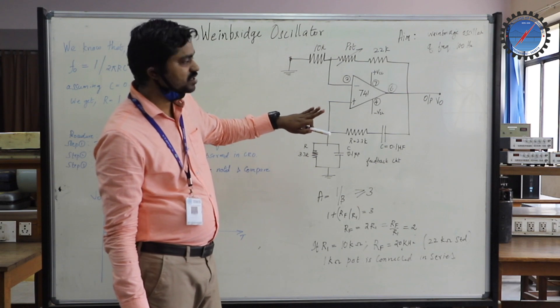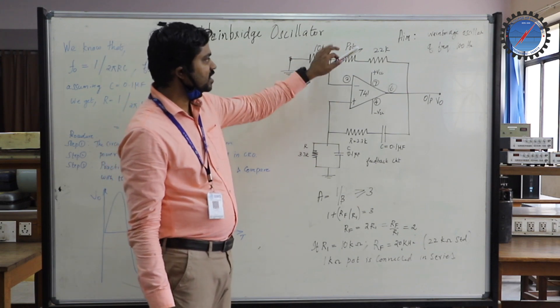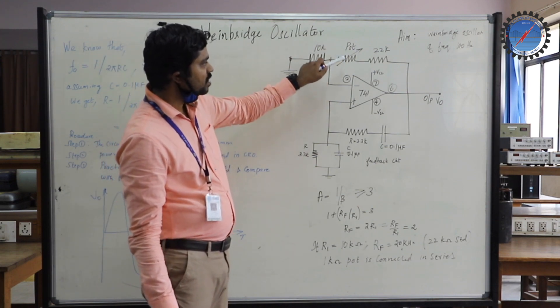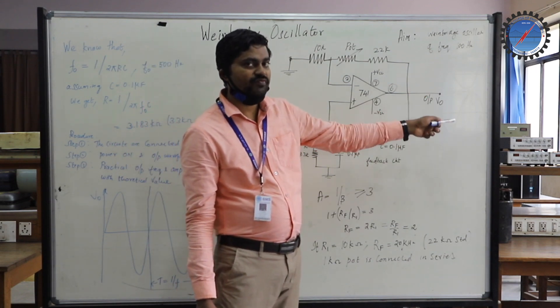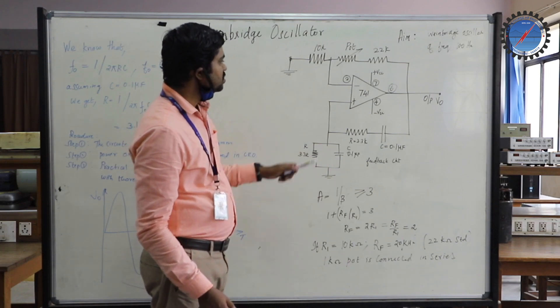Unlike your pass filters, you have a potentiometer which has to be adjusted. It is an adjustable pot, and you can adjust it to get oscillations in your output V0.